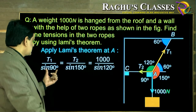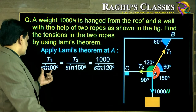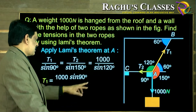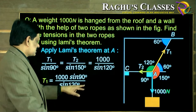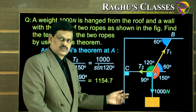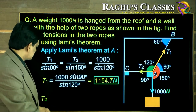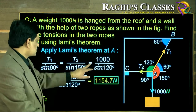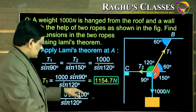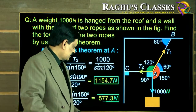It is a matter of simplification. Equating the first to the last: T1 is 1000 multiplied by sine 90 upon sine 120, which gives approximately 1154.7 Newtons. And equating the second and third: T2 is 1000 multiplied by sine 150 upon sine 120, which gives 577.3 Newtons.